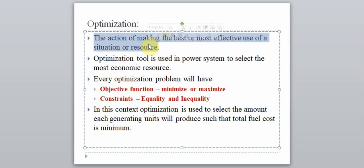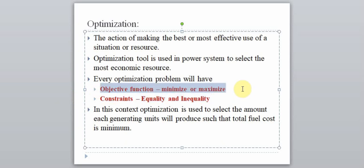The definition of optimization is: the action of making the best or most effective use of resources. When we apply this optimization concept to economic operation of the power system, the resource is the fuel cost of the unit. We are making the best use of the fuel so that the total fuel cost is minimum — that is our objective. Every optimization problem will have two terms: one is the objective function, and the main goal is either to minimize or maximize this objective function.